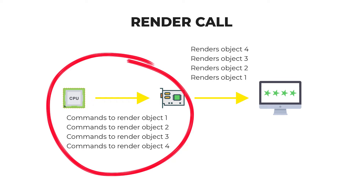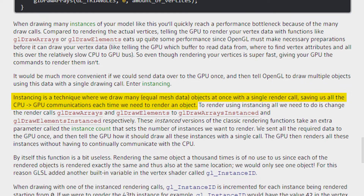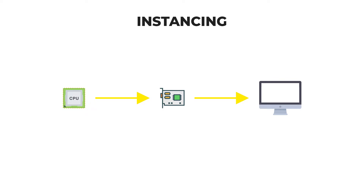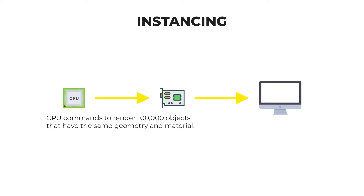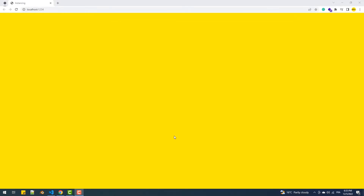Thankfully there is a solution, which is instancing or instanced rendering. To understand how this technique is helpful, let's revisit the definition: instancing is a technique where we draw many objects at once with a single render call, saving us all the CPU-GPU communications. With instancing we can render a million meshes with one single render call, but only if the meshes share the same geometry and the same material. Since we have the same data, we can pass it only once to the GPU and let it render them all at once.